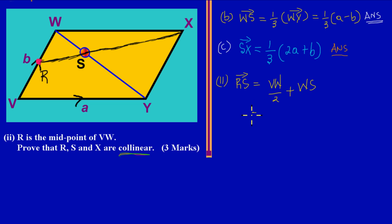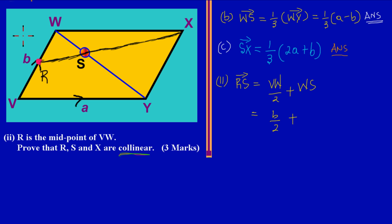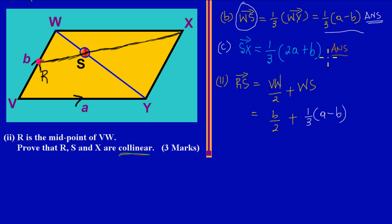By substitution, RS equals one-half of b — where b represents VW — plus W to S, which we had already found in the previous lesson. W to S was one-third of (a minus b), because that's what we had gotten for W to S. So here we have our expressions; let's simplify.